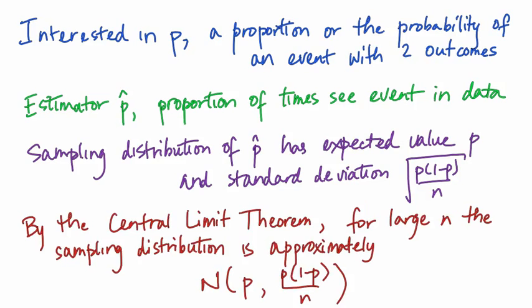We've looked at the case where p equals 0.5, which gives us a symmetric sampling distribution. When p is further from 0.5 — say closer to 0 or to 1 — we need a much larger sample size before the normal distribution is a good approximation, based on the central limit theorem.